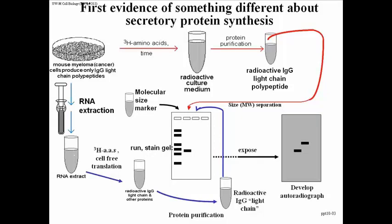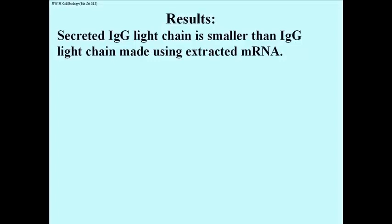The radioactive spot for cell-secreted IgG forms at the same position as the stain in lane 2 — no surprise there. However, the IgG made by cell-free translation also shows up, and the expectation was that it should appear at the same position. Instead, it represents a spot that migrated more slowly — it didn't travel as far from the well — compared to the secreted IgG produced by the culture. On these gels, slower-moving molecules are larger, so the cell-free translation product is larger than the secreted IgG light chain.